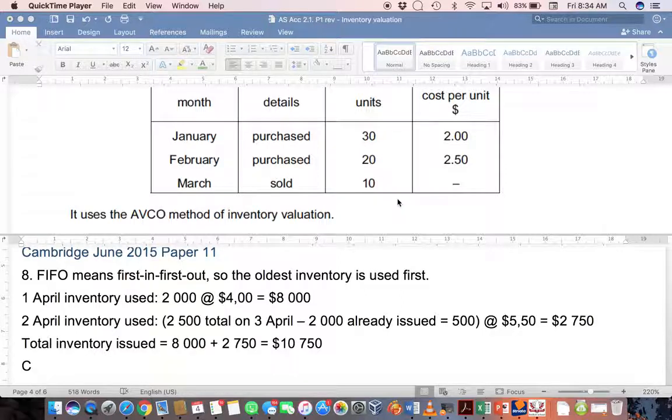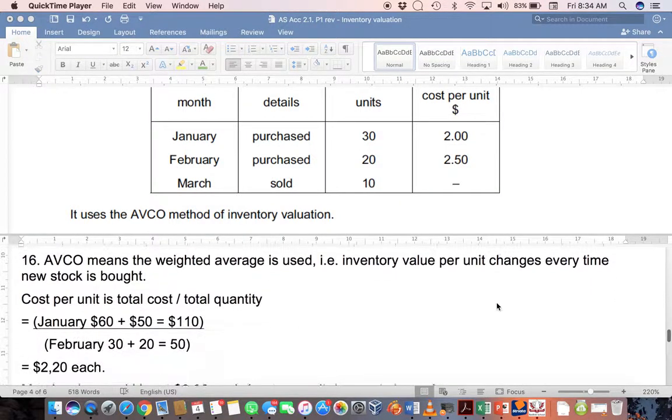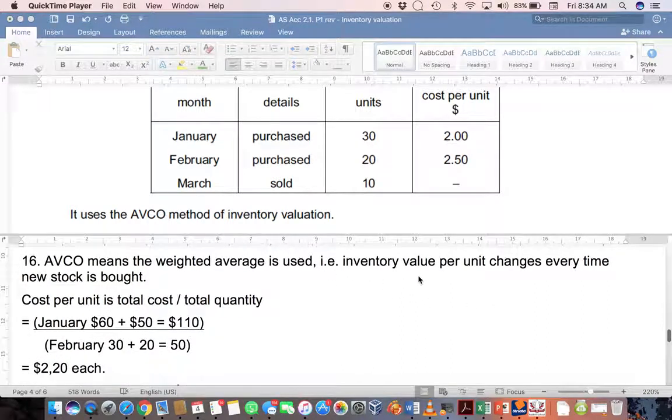This is the other very commonly used method. AVCO simply means you're using the weighted average. In other words, you're going to calculate the average value of inventory on hand and recalculate this every time new stock is bought. You'll use the total cost divided by the total quantity.